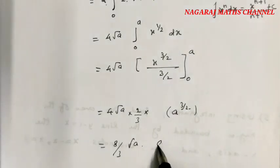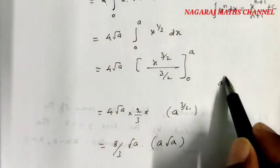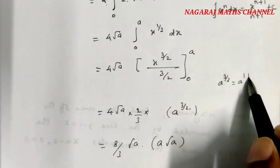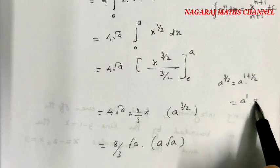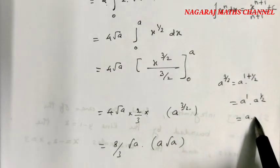Substituting the limits, when x = a, we get a^(3/2) which is a^1 times a^(1/2) = a · √a. When x = 0, we get 0.